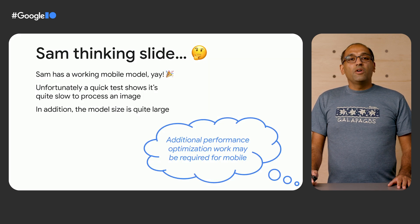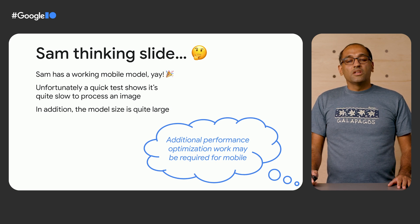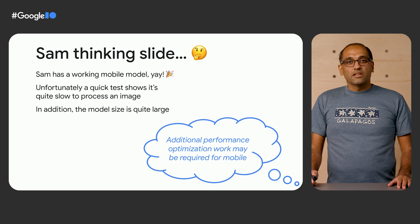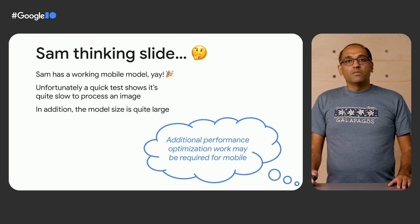Sam now has a TensorFlow Lite model that can actually run on a mobile device. Unfortunately, an initial test shows that it's slow to process an image, which does not make for a great user experience. In addition, the model size is quite large, which will increase the app size. Sam realizes that the TensorFlow Lite model needs to be optimized for mobile to make it run faster and also reduce its size to prevent application bloat.